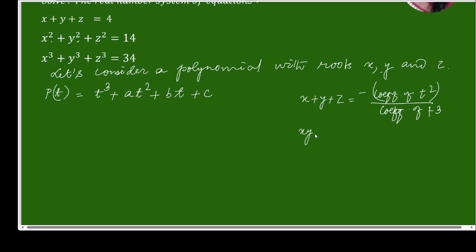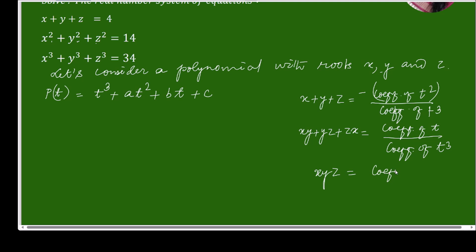Similarly, xy + yz + zx equals the coefficient of t upon the coefficient of t³, and xyz equals the constant term. So x + y + z = −a/1, and since this is given as 4, we get a = −4.